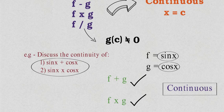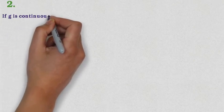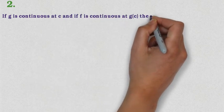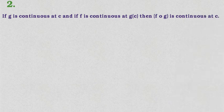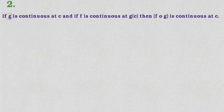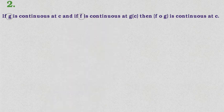I hope you now understand the theorem and how to apply it. The main concept of continuity must be clear, and then applying this theorem is straightforward. Now let's move to Theorem 2. Theorem 2 states: if g is continuous at c and f is continuous at g(c), then the composite function f of g is continuous at c, written as f ∘ g.